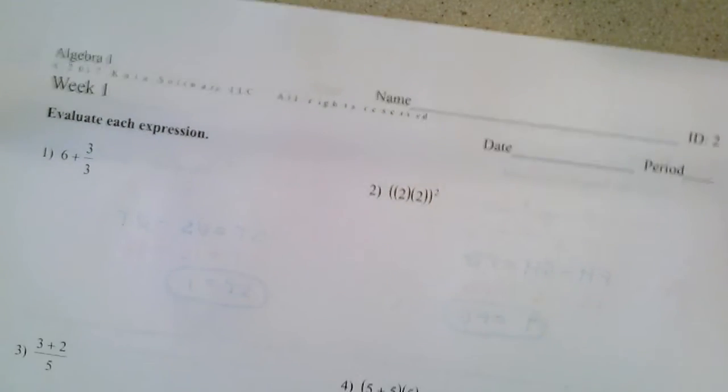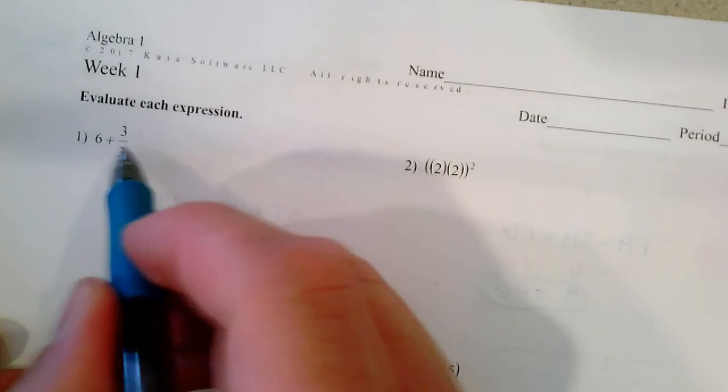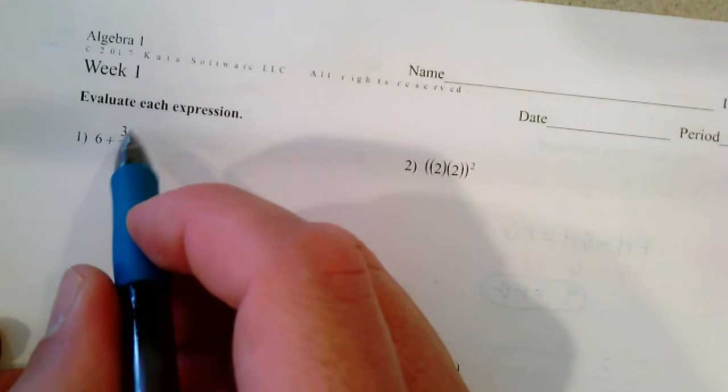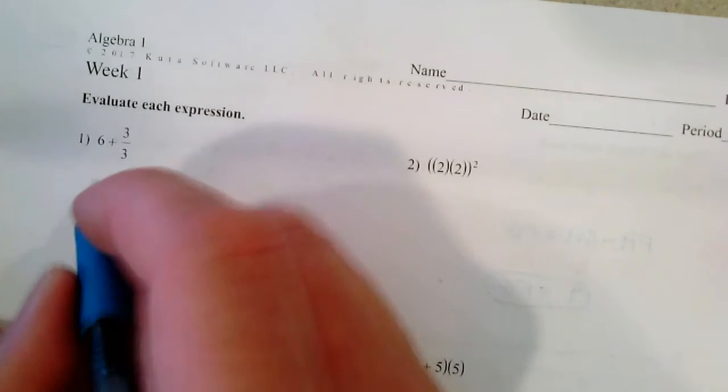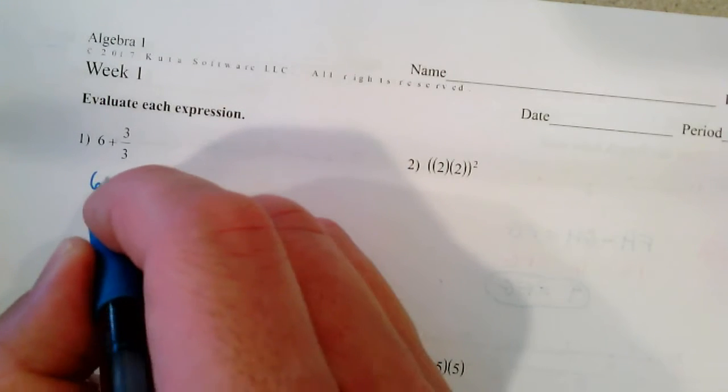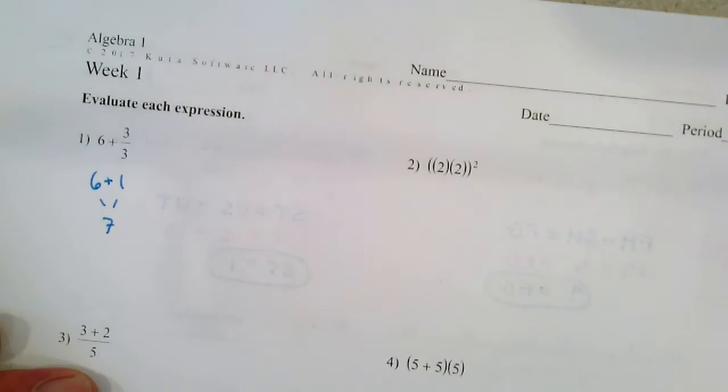Alright, over here. We're going to do a little order of operations. We've got addition and we've got division. That's what a fraction means, this means 3 divided by 3. We're going to do that first. 3 divided by 3 is 1. And 6 plus 1 is 7.